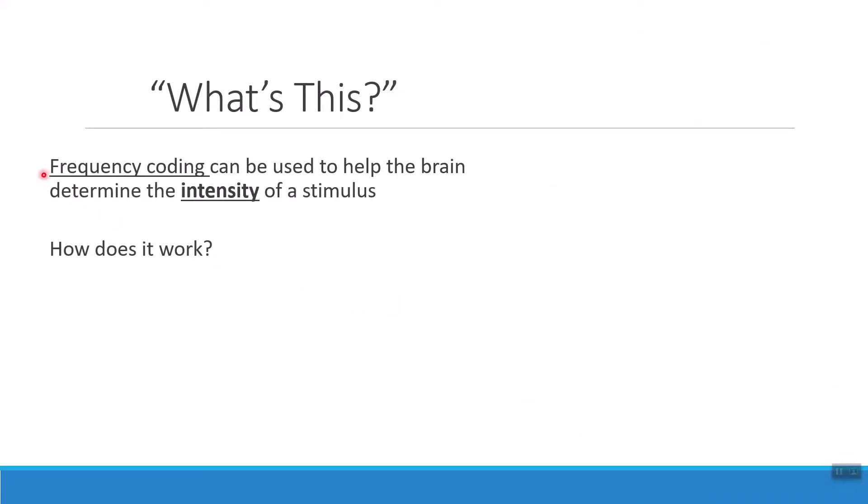In addition to coding different kinds of sensory information differently, we also use what's called frequency coding to help us to determine how intense a stimulus is. So what I mean by that is, am I touching something that's kind of hot or really hot? Am I holding something that's kind of heavy or really heavy? So frequency coding is the way that our body figures out how strong or weak a stimulus is.